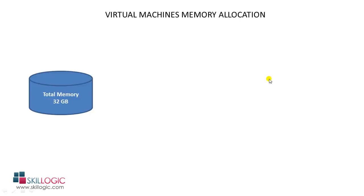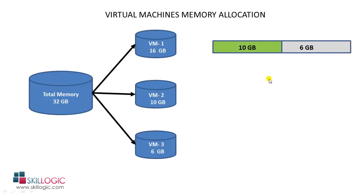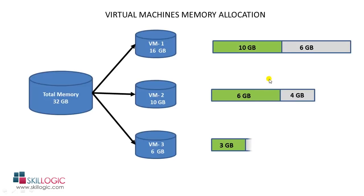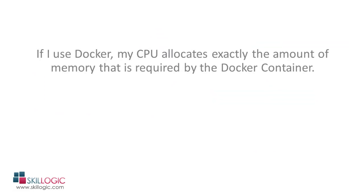For example, if I have a 32 GB machine and want to run three virtual machines in parallel, I need to divide memory among them: VM1 gets 16 GB, VM2 gets 10 GB, and VM3 gets 6 GB. But the actual utilization is: VM1 uses only 10 GB leaving 6 GB free, VM2 uses 6 GB leaving 4 GB free, and VM3 uses 3 GB leaving 3 GB free. In total, 13 GB of unused memory is blocked by virtual machines and cannot be reallocated.